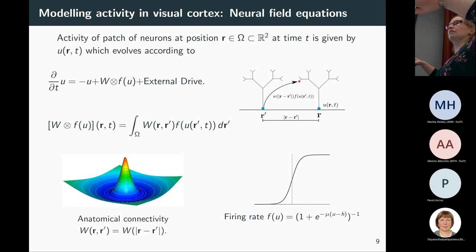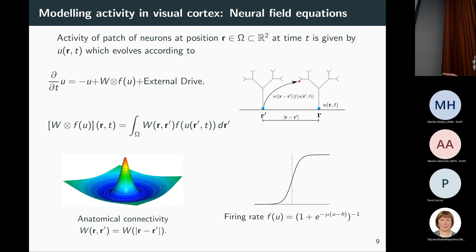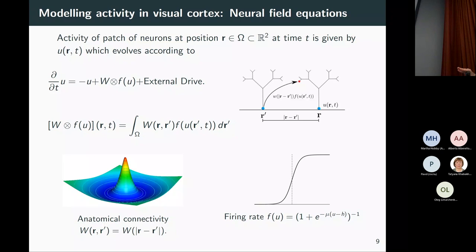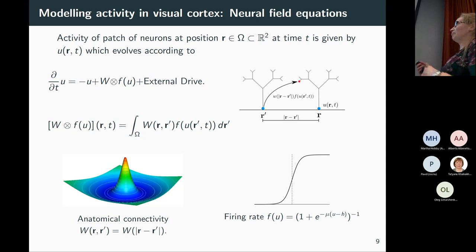The neuron is going to get some excitatory and some inhibitory input. Without any external drive — the external drive we'll add later from an image — you can find a homogeneous steady state, a non-patterned state. Then you look for where that becomes unstable and patterns start to grow. If you want a single population of neurons you need connections that are both excitatory and inhibitory. You could also have excitatory and inhibitory populations at every point, but that makes the model more complicated — this simpler single-population model works nicely.